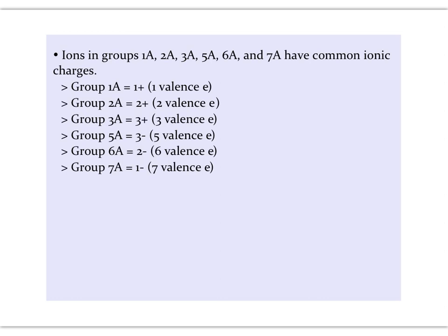Remember, there are certain groups on the periodic table that have a common ionic charge. Group 1A plus 1, 2A plus 2, 3A plus 3, and then 5A minus 3, 6A minus 2, and 7A minus 1. These will come in handy when we start writing the formulas for these binary ionic compounds.